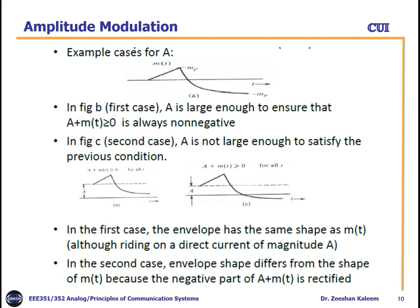As shown in Figure B, A must be large enough to ensure that A + M(t) ≥ 0 at all times. A acts as a DC offset that shifts your axis upward, so A + M(t) starts from that shifted level and remains always non-negative. In Figure C, A is not large enough, and the signal crosses into the negative side, resulting in distortion.